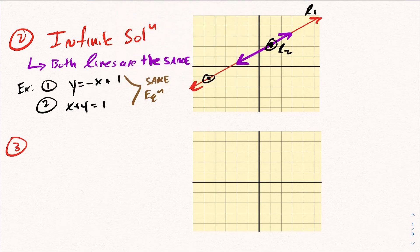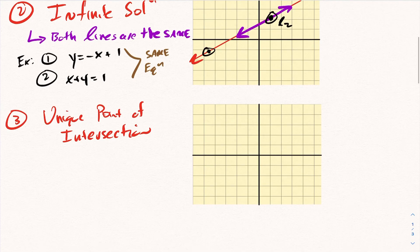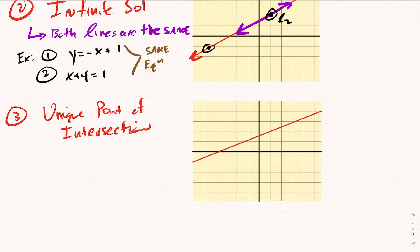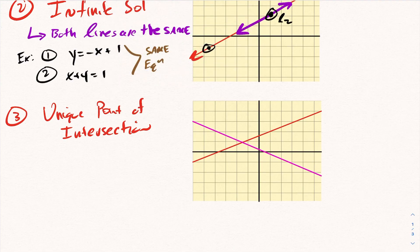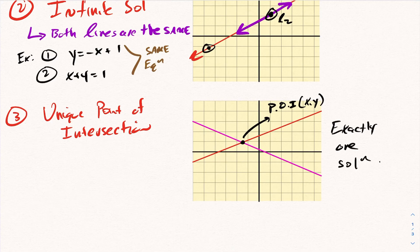The final option is a unique point of intersection. You can have two lines that actually cross at exactly one point. That point of intersection — abbreviated POI — is some coordinate (x, y). The term 'unique' means there is exactly one solution.